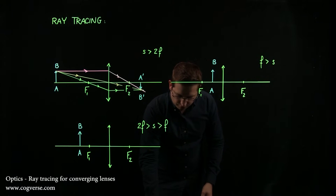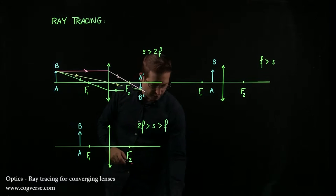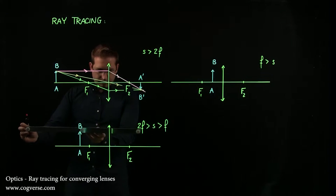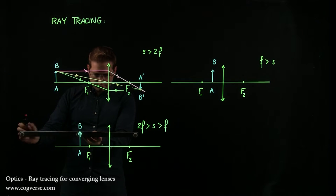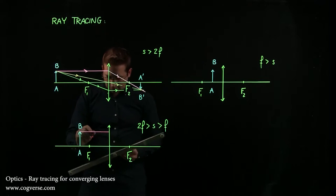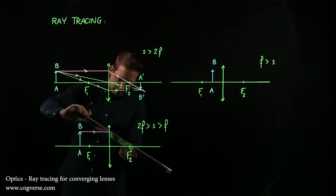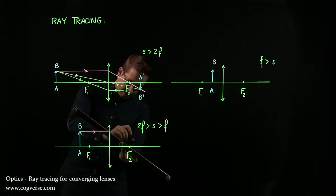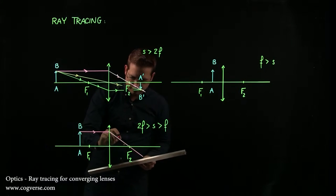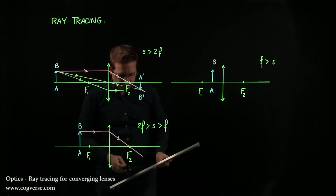So the first rule is that any ray of light coming from B, and that is parallel to the optical axis, comes out through f2. So we have incoming light like this, comes out through f2, like that.